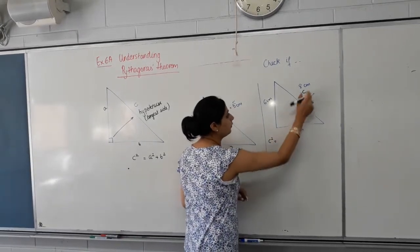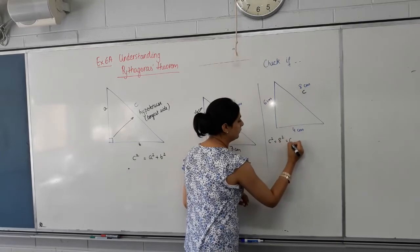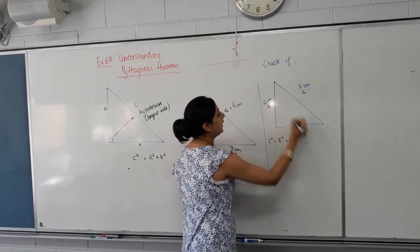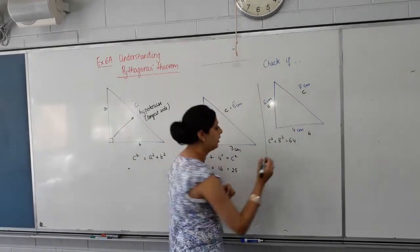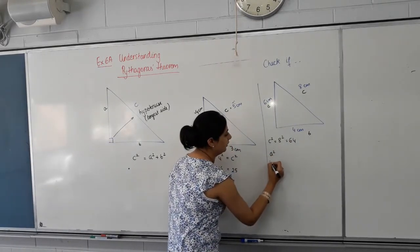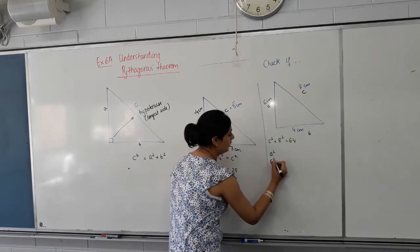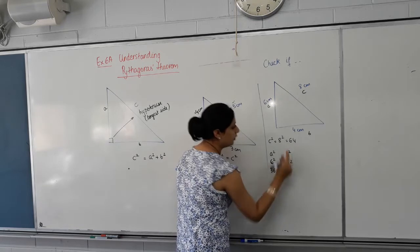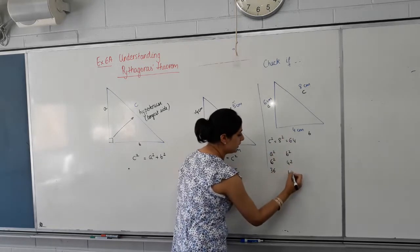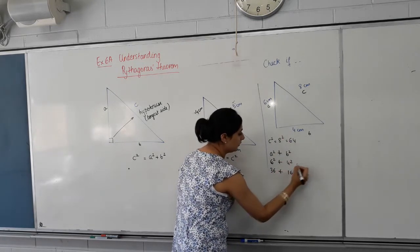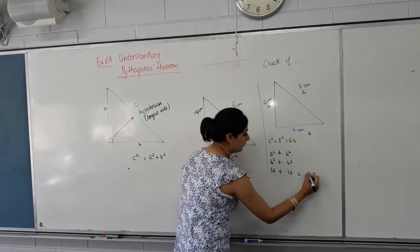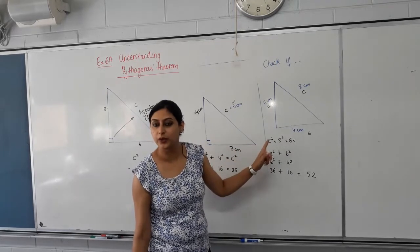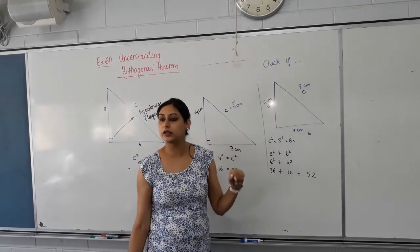Then, can we find C squared? What's 8 squared? 64. Now, we need to check whether it equals to this squared plus that squared. Right? So what's A squared? 6 squared, which is 36. What's B squared? 4 squared, which is 16. Let's add it. 52. So does this equal our C squared? No. So is this a right-angled triangle? No.